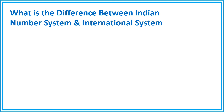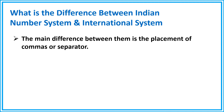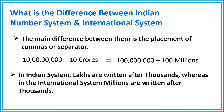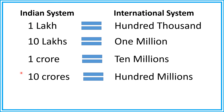The main difference between the Indian number system and the international system is the placement of commas or separators. In the Indian number system, the first comma is placed after the hundreds place, after which commas are placed after every two digits. In the international system, the first comma is also placed after the hundreds place, but after that, commas are placed after every three digits. In the Indian system, lakhs are written after thousands, whereas in the international system, millions are written after thousands. So 1 lakh equals 100,000 internationally, 10 lakhs equals 1 million, 1 crore equals 10 million, and 10 crores equals 100 million.